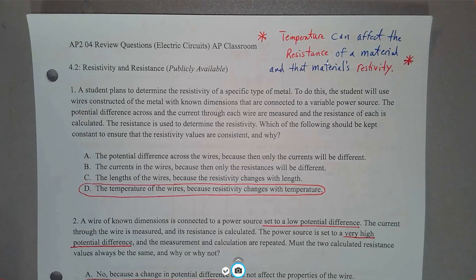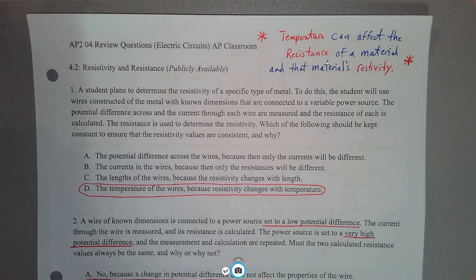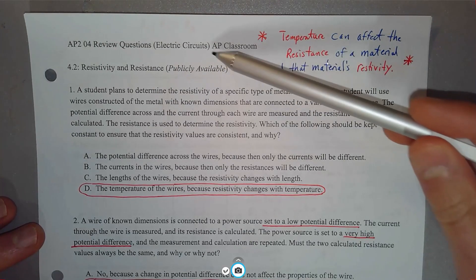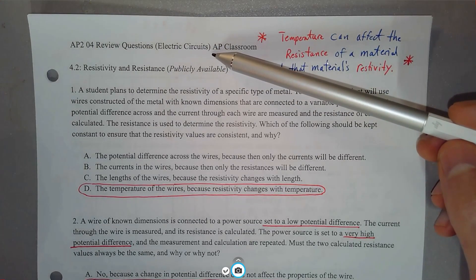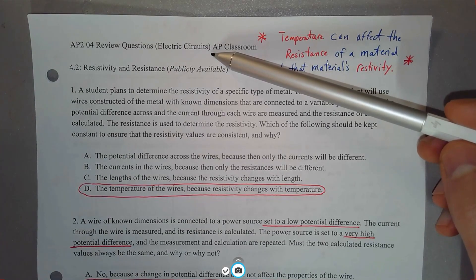In this video we're going to be looking at some sample AP Physics 2 questions dealing with Unit 4 content, which is electric circuits, which includes internal resistance and circuits that have both resistors and capacitors.